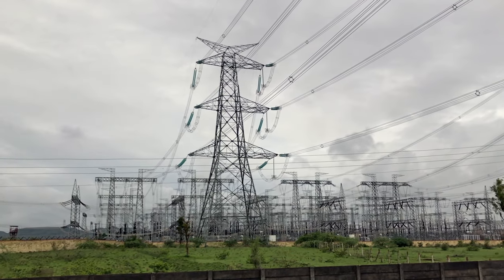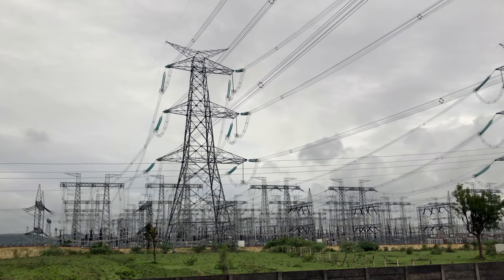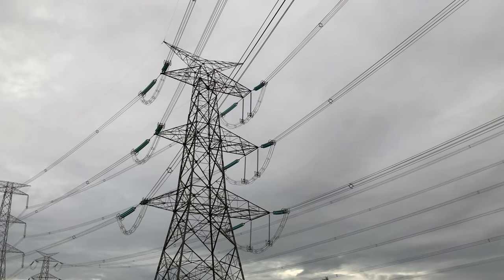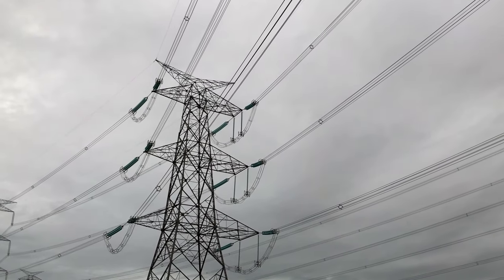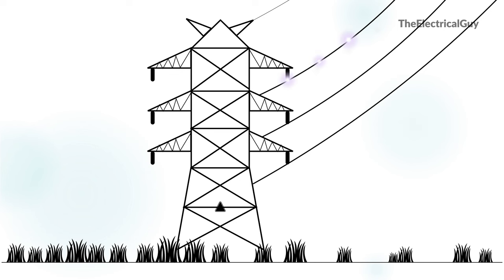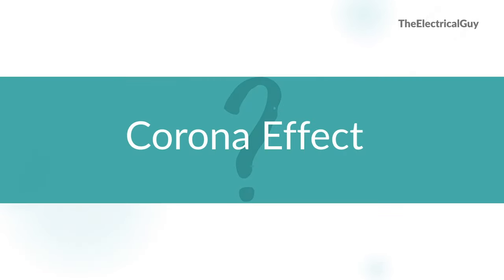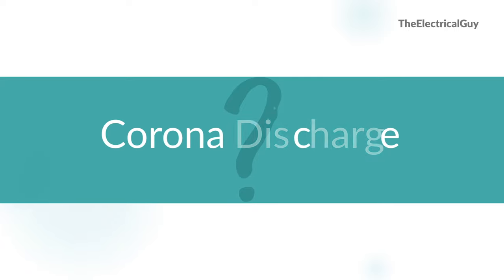Have you ever noticed the humming noise while passing by a substation or high and extra high voltage transmission line? Have you ever noticed the violet glow that occurs on high and extra high voltage transmission lines? In electrical engineering, this is called the corona effect or corona discharge.